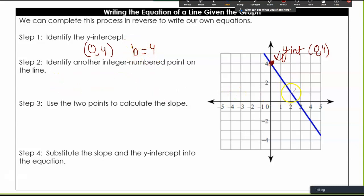Step one, identify my y-intercept. So that's 0, 4. In other words, b equals 4. Identify another integer. I'm going to go with 2, 1. I can calculate the slope, so I have two options. I can use 0, 4.